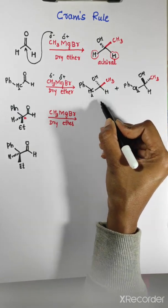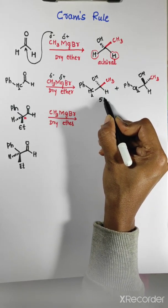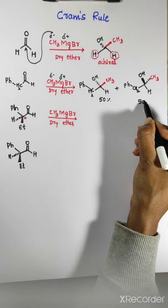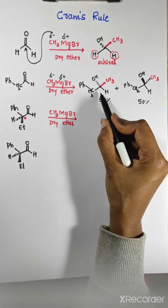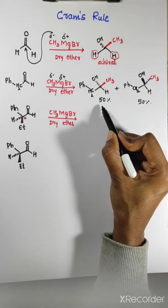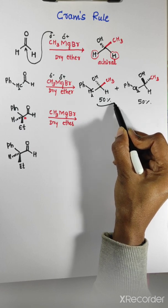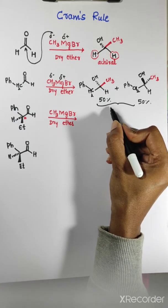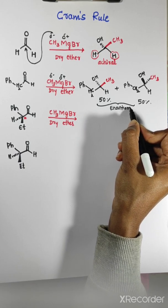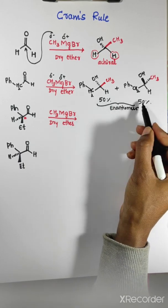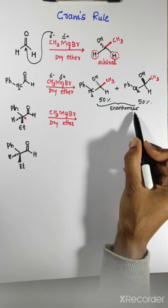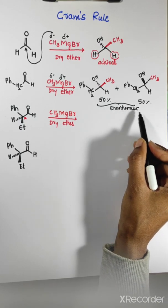These two products are 50-50%. Nucleophile attacking above the plane gives one product and nucleophile attacking below the plane gives another. Hence, these two are 50% each - they are enantiomers. Enantiomers means racemic mixture - these two form a racemic mixture.